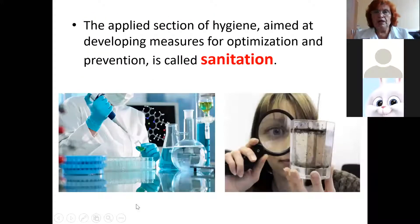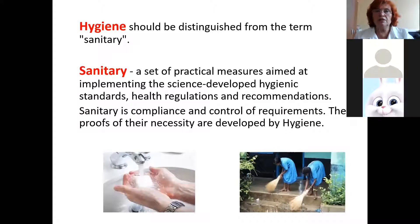The applied section of hygiene aimed at developing measures for optimization and prevention is called sanitation. Hygiene should be distinguished from the term sanitary. Sanitary is a set of practical measures aimed at implementing scientifically developed hygienic standards, health regulations and recommendations. Sanitary is compliance and control of requirements, the proofs of whose necessity are developed by hygiene.